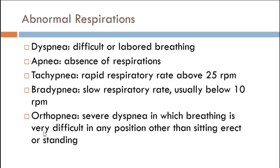Here are the terms used for abnormal respiration. Dyspnea is difficult or labored breathing. Apnea usually happens at night. Tachypnea is rapid breathing. Bradypnea is slow breathing. And orthopnea — which comes up in our fitness assessment for lifestyle pre-activity screening — is severe shortness of breath when someone is in a horizontal position, like lying down.